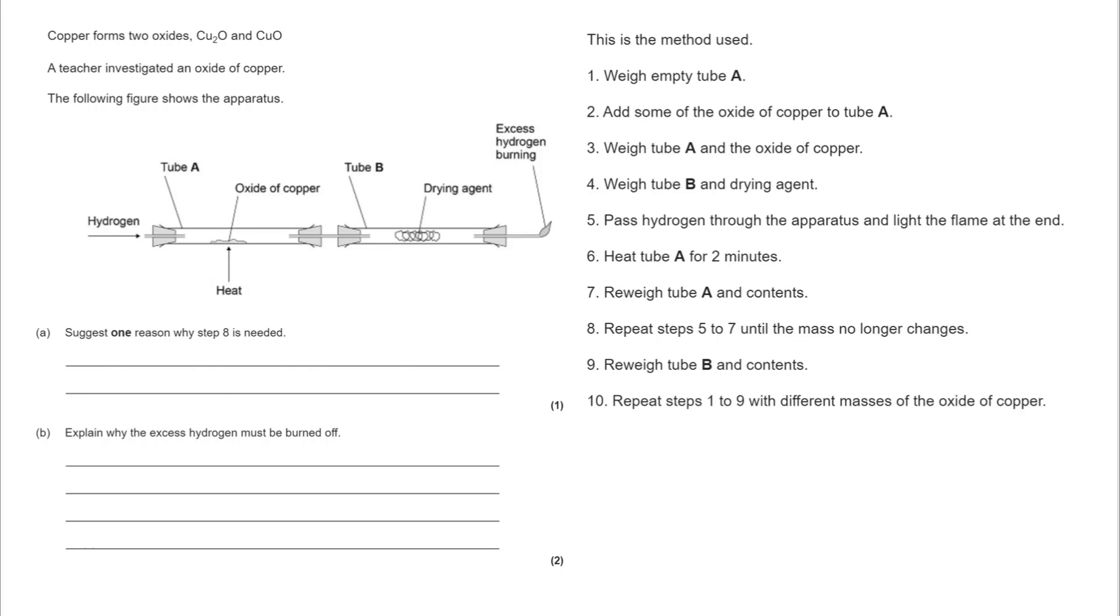The method: weigh empty tube A, add some oxide of copper to tube A, weigh tube A and the oxide of copper, weigh tube B and the drying agent, pass hydrogen through the apparatus, light the flame at the end, heat tube A for two minutes, re-weigh tube A and contents and repeat until the mass no longer changes. Then re-weigh tube B and contents and repeat with different masses of the oxide of copper.